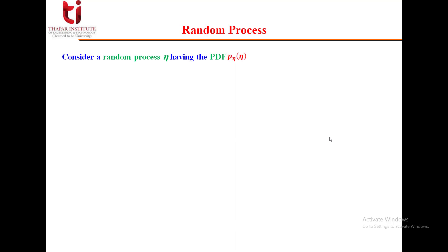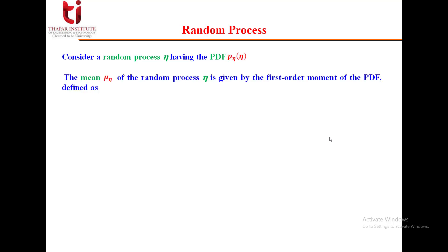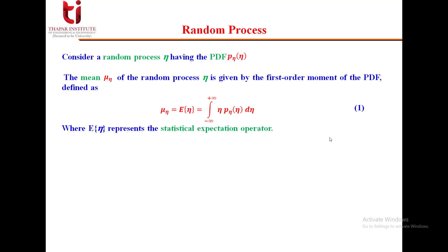Consider a random process η with probability density function p(η). The mean μ_n is the first-order moment of the PDF, defined as: E[η] = integral from −∞ to +∞ of η · p(η) dη, where E represents the statistical expectation operator. It is very common to assume that the mean of a random noise process is zero.